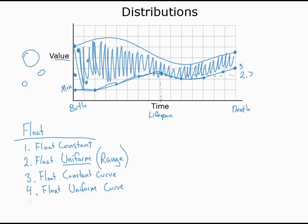The fifth and final float distribution is the float particle parameter — a special type used when you want control from outside of Cascade, such as from Matinee, Kismet, or UnrealScript. It simply takes in an input value from those external sources and fires it directly into the distribution value. I'll talk more about this once we've covered all the other distributions, because it warrants a bit of special discussion.